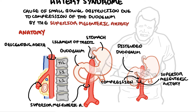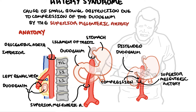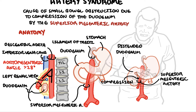Above the superior mesenteric artery is the celiac artery, and below is the renal artery at about L2. The superior mesenteric artery goes over two important structures: the third part of the duodenum and the left renal vein, which then drains into the inferior vena cava. As the superior mesenteric artery arises from the aorta, it is surrounded by fat, allowing it to extend at a particular angle between 28 to 65 degrees — this is called the aorta-mesenteric angle. The aorta-mesenteric distance is 10 to 34 mm.